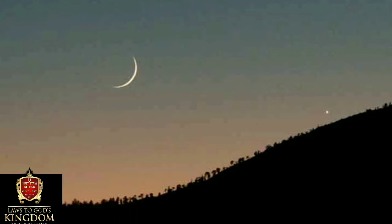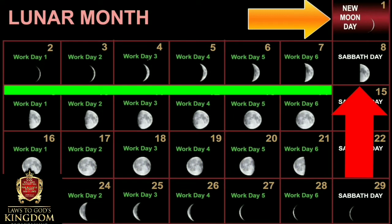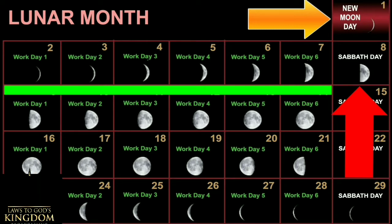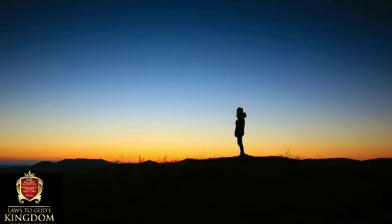Go out on time and look up towards the west. After maybe 10 to 15 minutes after the sun goes down, keep looking west — you should be able to see the first crescent of the moon. If you see it that evening, that means you have a one-day New Moon. Then the next day you go to work, walk for six days, and rest on the seventh day — the Sabbath.